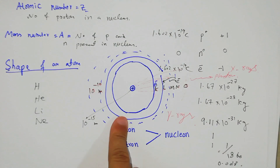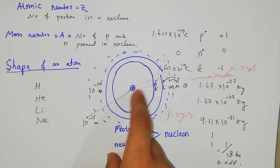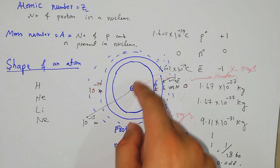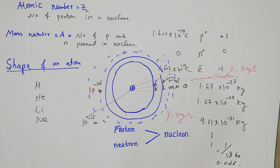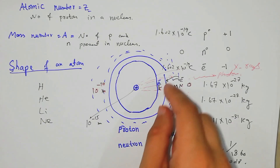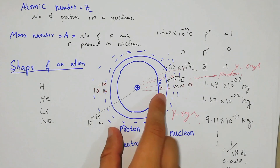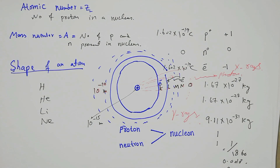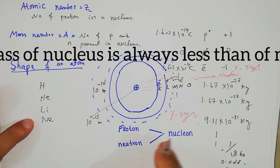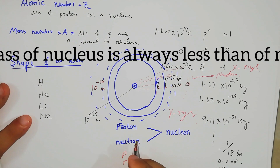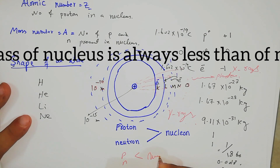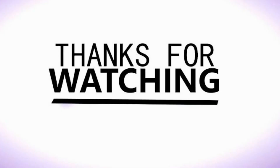Regarding atomic size trends in the periodic table: the atomic size increases from top to bottom in a group, because additional energy levels are added. The atomic size decreases from left to right across a period. At the end of the video, there is a question for you: why is the mass of a proton or neutron always less than the mass of a nucleon? Please answer in the comments, like the video if you enjoyed it, and take care — bye bye.